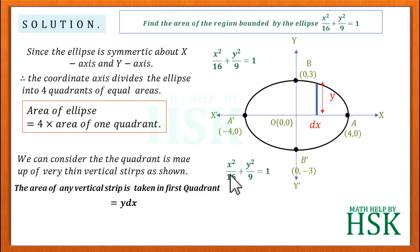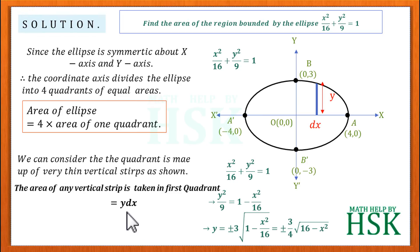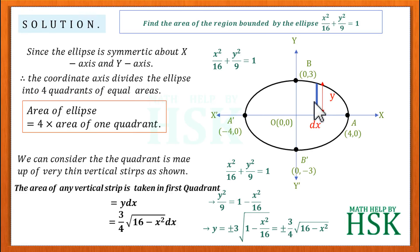The area of one vertical strip in the first quadrant is y dx. To find y, I write from the ellipse equation: y²/9 = 1 − x²/16. Cross-multiplying and taking the square root gives y = ±(3/4)√(16 − x²). Since we are in the first quadrant, y = (3/4)√(16 − x²). So the area element is (3/4)√(16 − x²) dx.